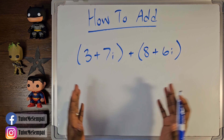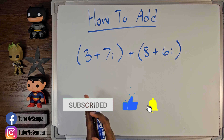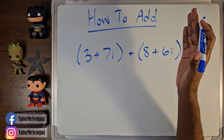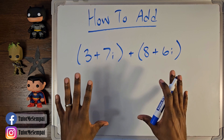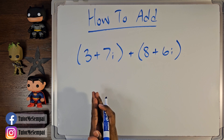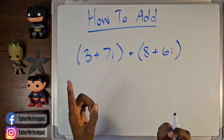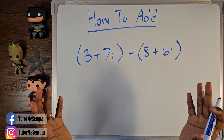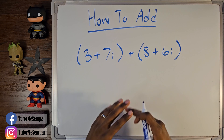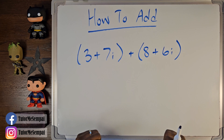In my previous videos, we've already talked about imaginary numbers and complex numbers, and if you haven't seen that video or you need a refresher, check out those videos — you can find them both right up here. But today we're going to be moving on and figuring out how to add our complex numbers. Adding our complex numbers will be rather simple. There's one main thing you need to know, and that's how to group like terms — similar to how you would add polynomials.